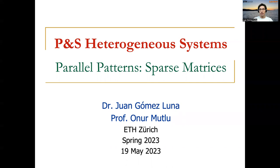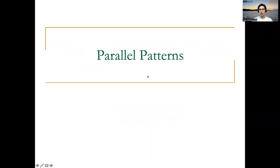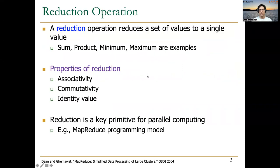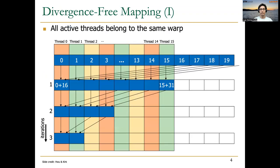Let me very quickly recap on the other parallel patterns that we have covered already in this course. We started with the reduction operation, which is an operation that reduces a set of values to a single value. The reduction needs to have three main properties: associativity, commutativity, and identity value, and it's a key primitive for parallel computing. Remember that we discussed how to implement a divergence-free mapping on GPUs in order to maximize SIMD utilization.